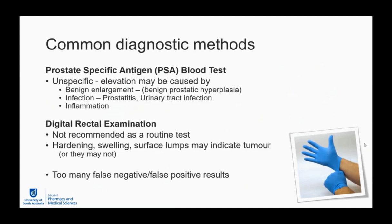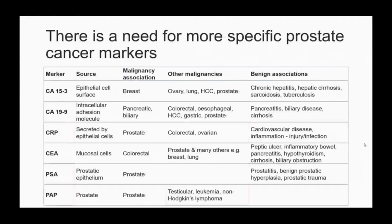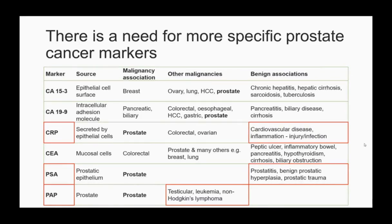With both methods there are too many false negative or false positive results, and you cannot determine how severe the malignancy is. Current guidelines don't recommend a population screening program. Other cancer markers, such as C-reactive protein, CA-15-3, and CA-19-9, have associations with prostate cancer but are not specific to the disease. There is therefore a more specific need for sensitive and specific diagnostic and prognostic markers.